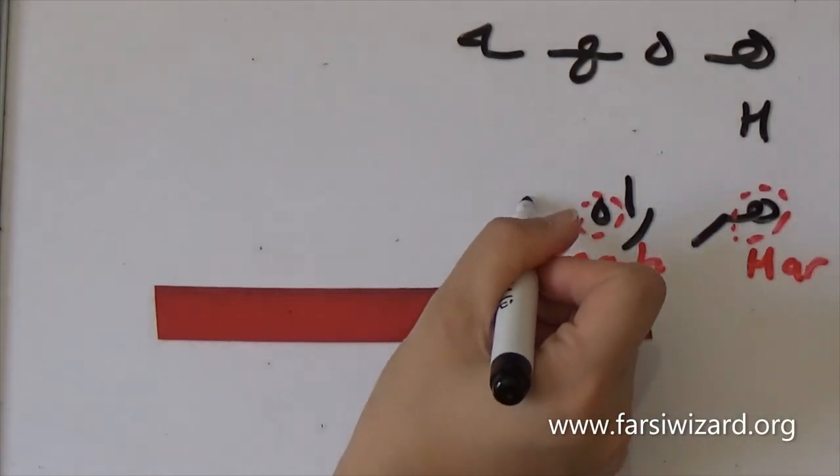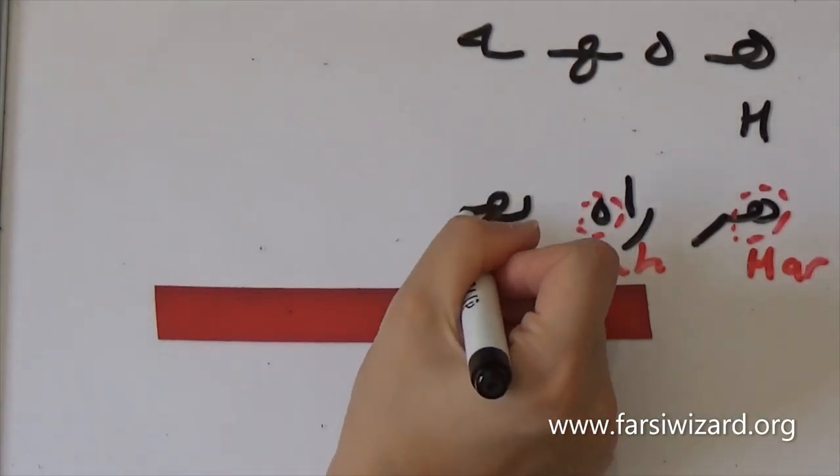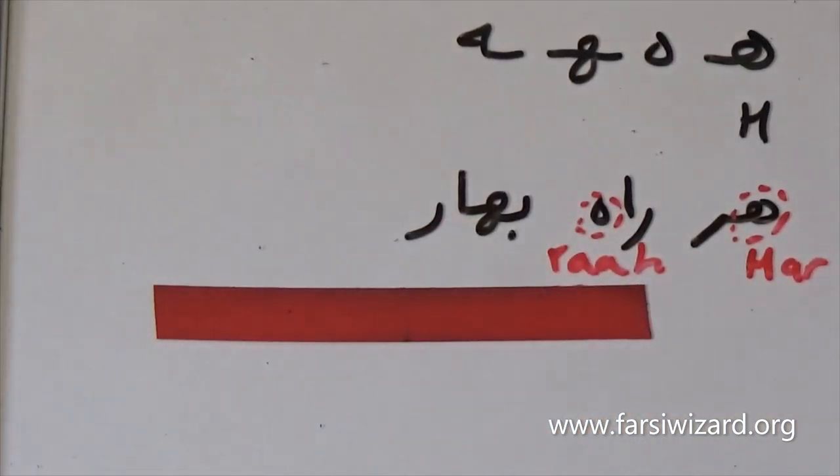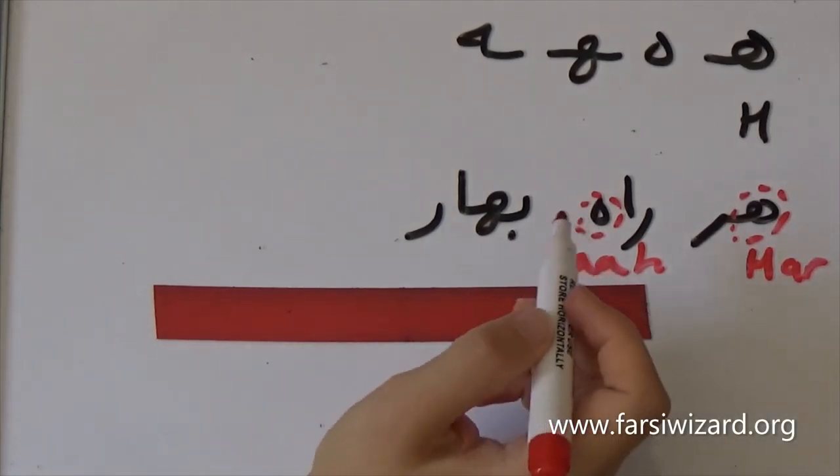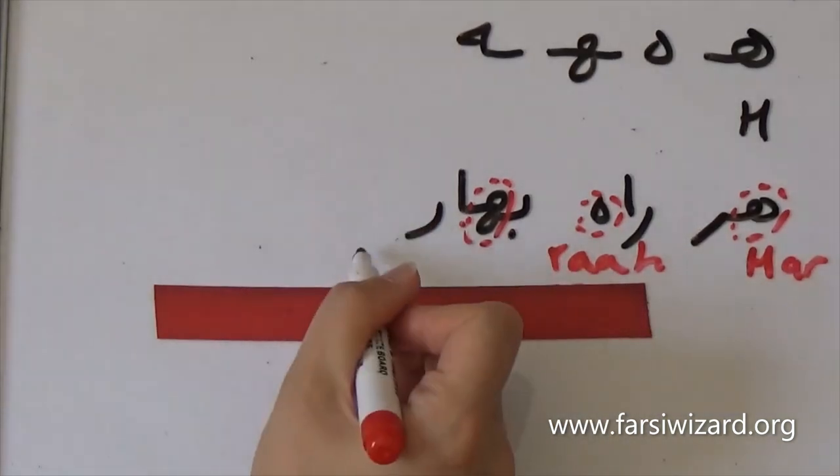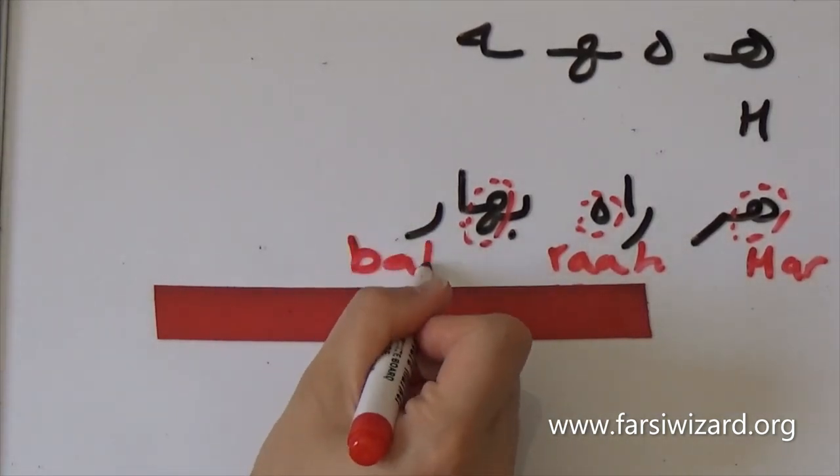In the third example we have the word bahar, which means spring—you know, spring, summer, fall, winter—spring. And here you can see the letter he has appeared in the middle of the word, so it's not the first, it's not the last, it's somewhere in the middle of the word, bahar.